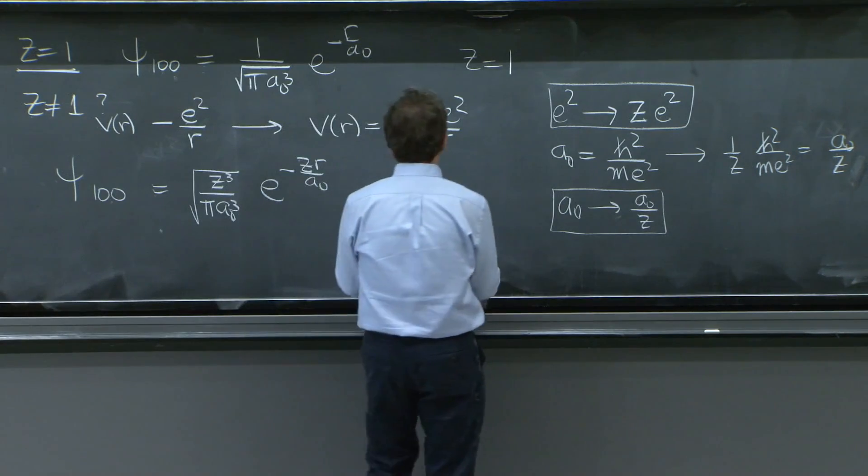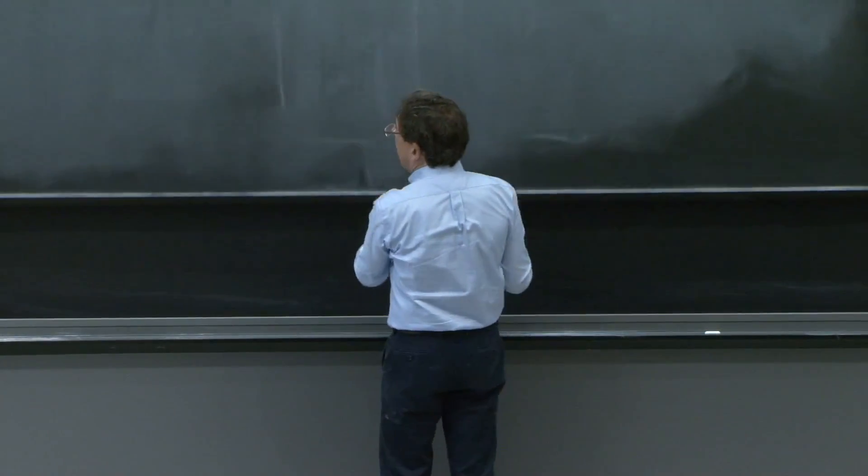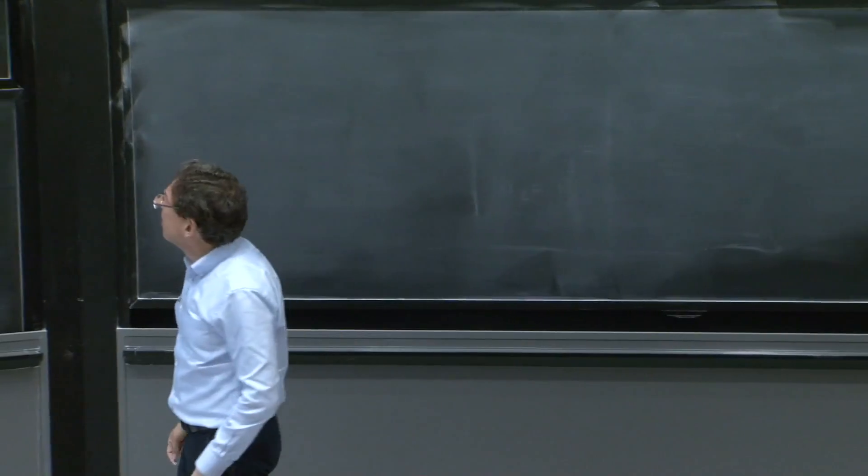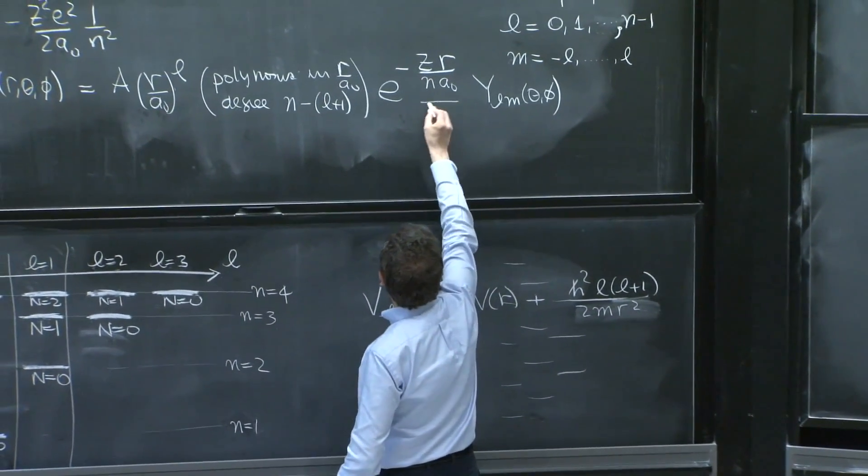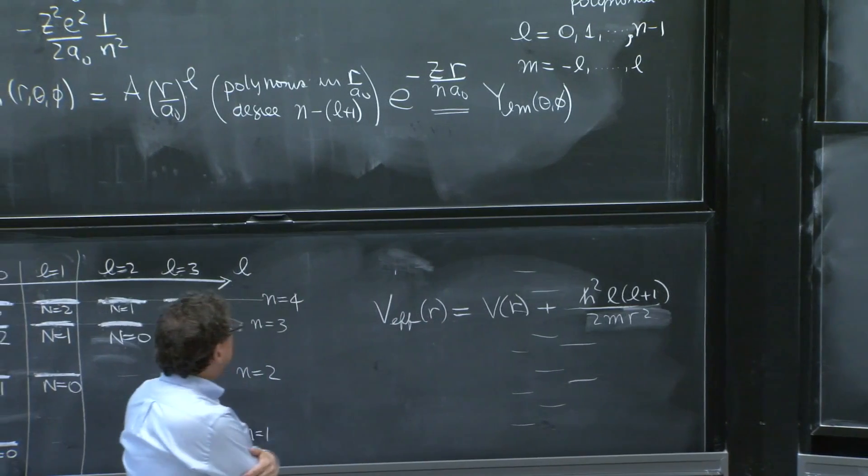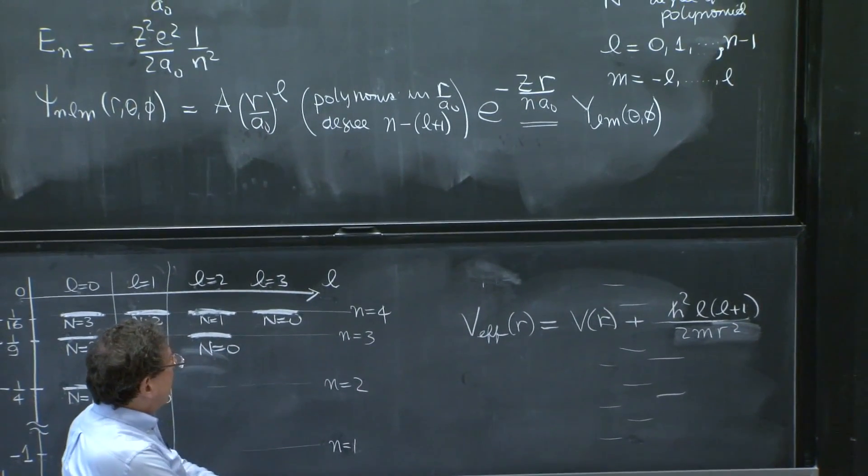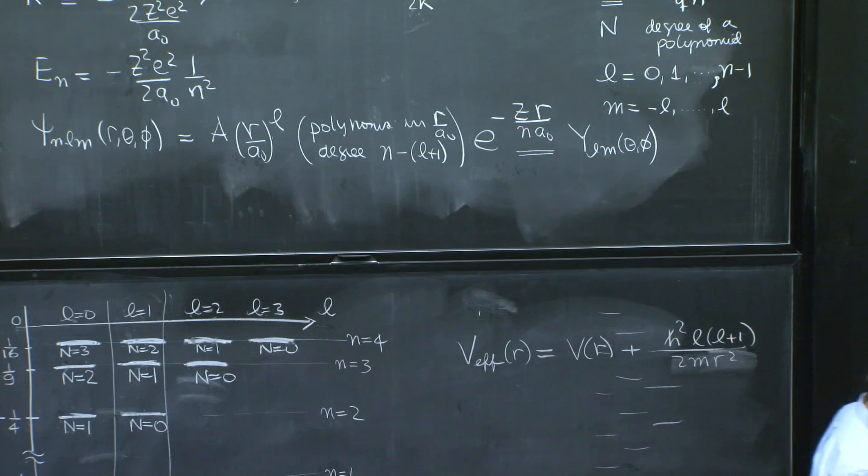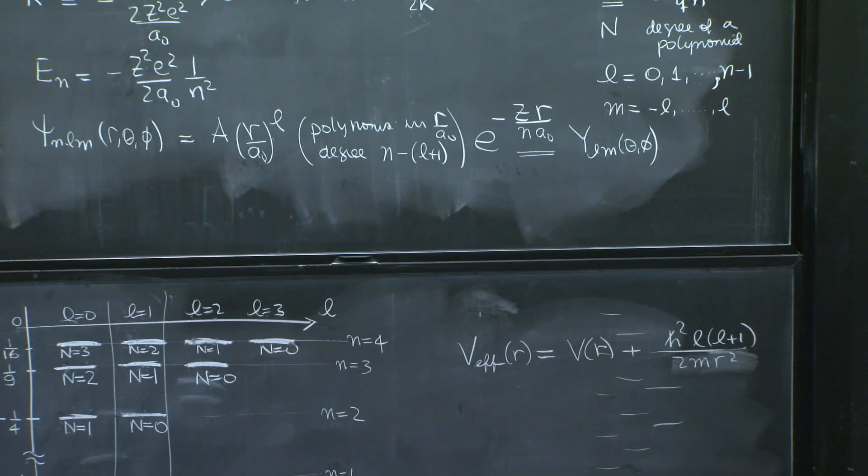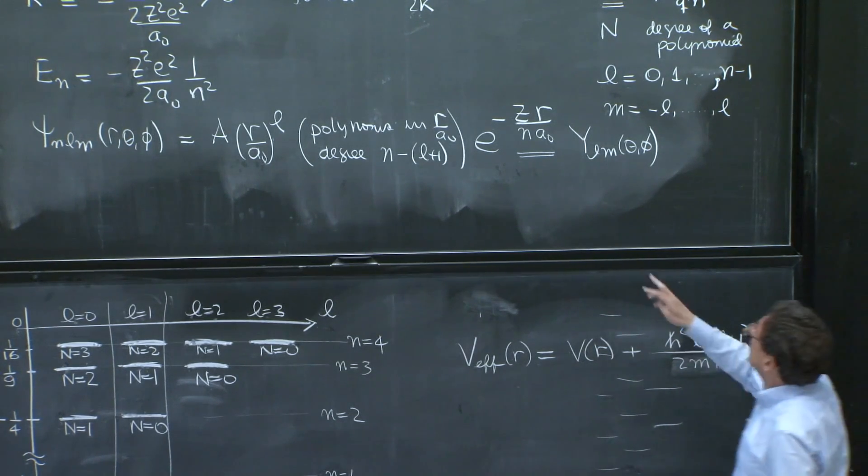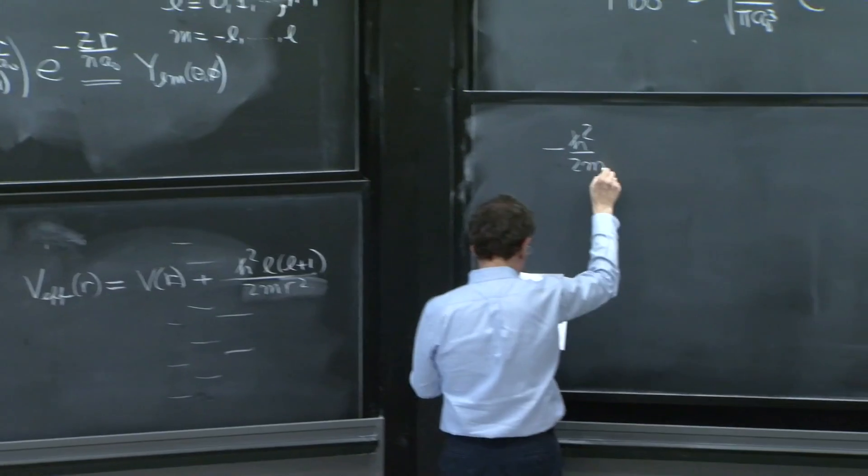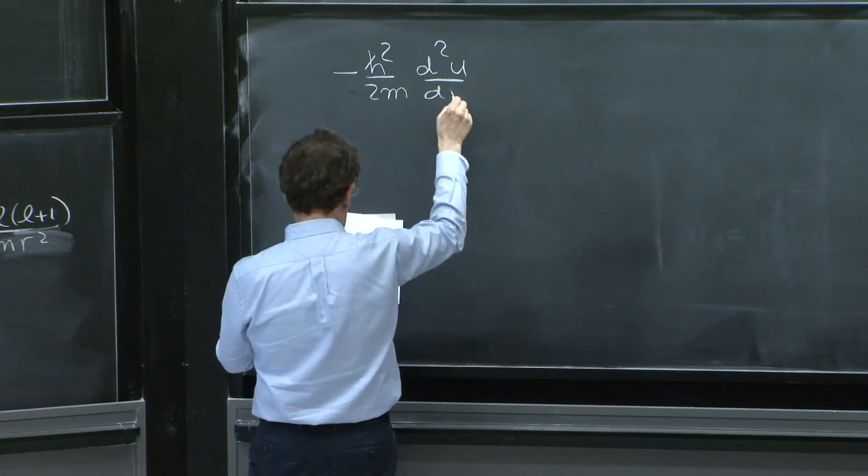That's one thing you could ask. Another thing that you could ask is, at least intuitively, why did we get this factor here? Why did we get this exponential? And that's also not mysterious at all. This comes from the differential equation. It comes rather immediately from the differential equation.